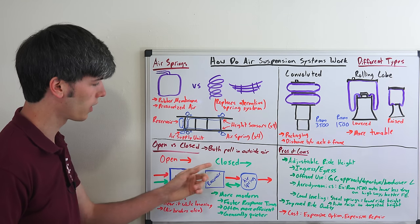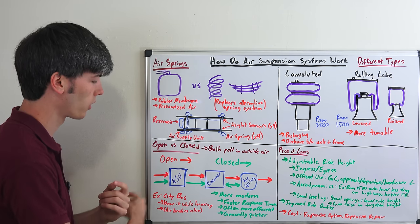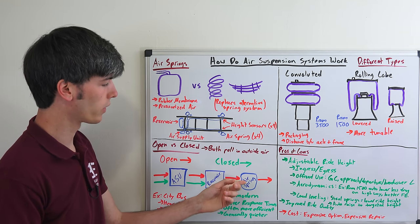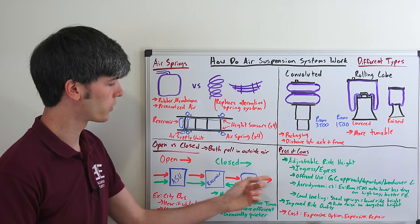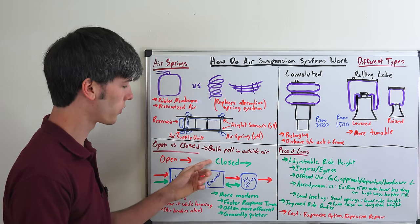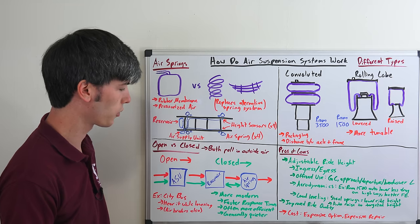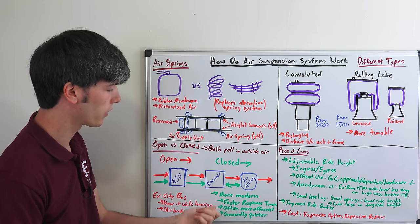Here in red we have the open system and in green we have the closed system. The open system goes from the reservoir to the air spring. And then when the air spring wants to release pressure, it just releases it to the atmosphere. Versus in the closed system, you can send that air pressure back and forth between the reservoir and the air spring. This is a bit more modern of a system.